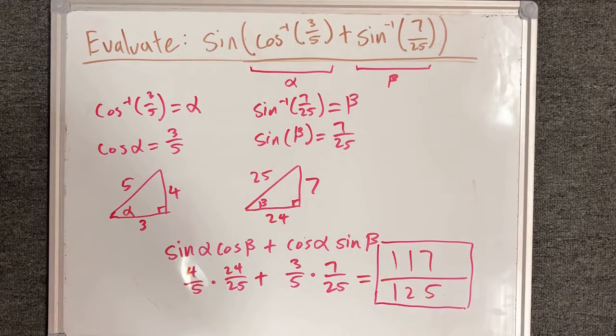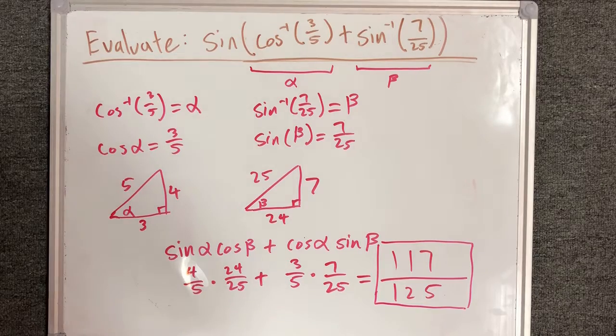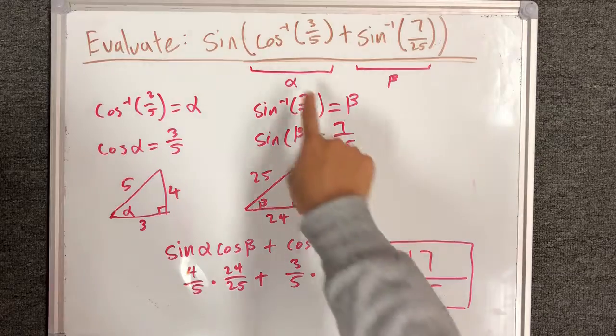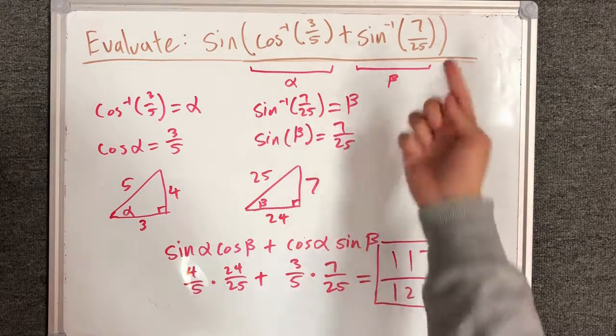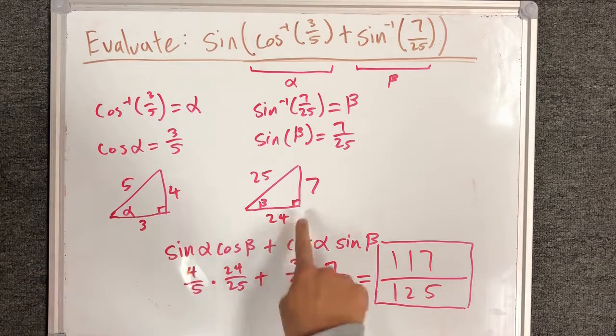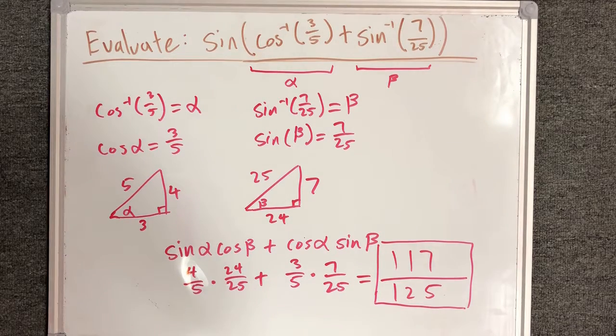Now, this question could have gotten a twist to it if one of these were negatives. So if we had a cosine of a negative ratio or sine of a negative ratio, we have to be a bit more careful and label our side lengths with the right plus or minus sign accordingly.